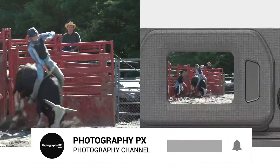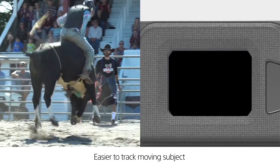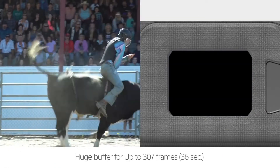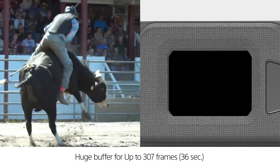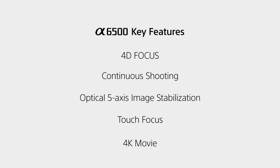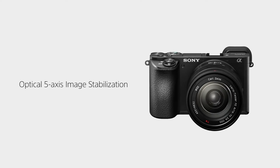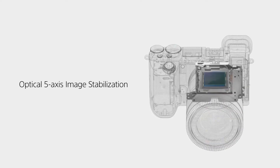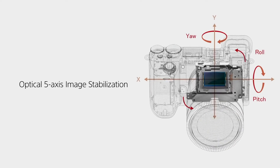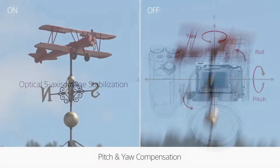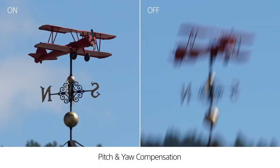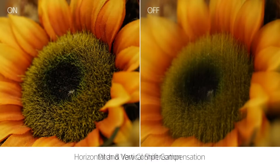It features the same 24.2 megapixel sensor as the predecessor, which still provides excellent image quality and dynamic range. However, it obtains the same processor from the flagship A99, allowing the camera to supply continuous shooting speeds of up to 11 frames per second and an enormous 100 shot buffer, representing nearly a five times improvement over the predecessor.